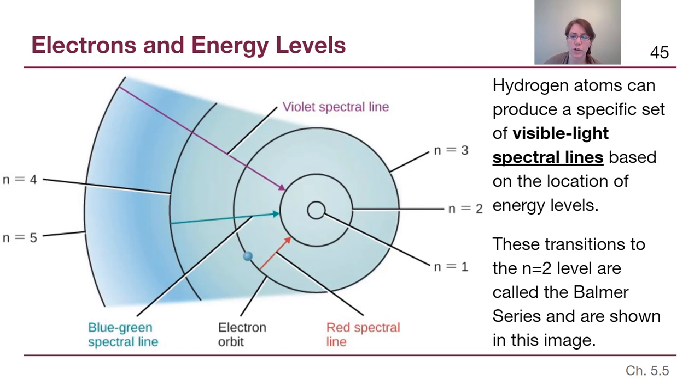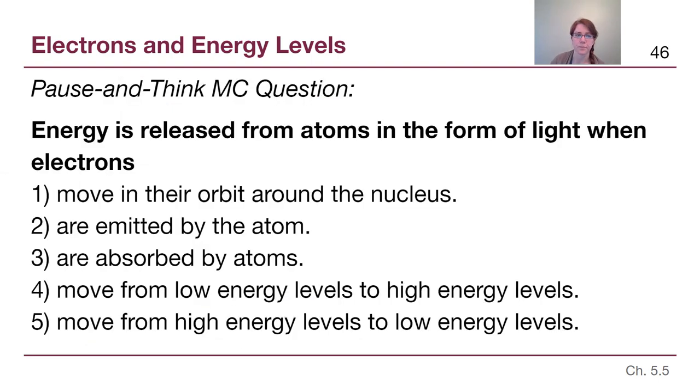Now the transitions shown here are called the Balmer series. We do not need to memorize that name. But what's worth recognizing is these don't go all the way down to n equals 1, which is the ground state, because if we were talking about the even bigger jumps to go all the way back down to the ground state, those lines have more energy, so much so that they're no longer visible light that our eyes can see. And we actually have a different name for those. Those are the Lyman series of lines. We don't need that name either. It's not even on the slide. But they would be in the ultraviolet. And so these three lines were actually discovered first by the scientist named Balmer because they were visible to him in the lab.